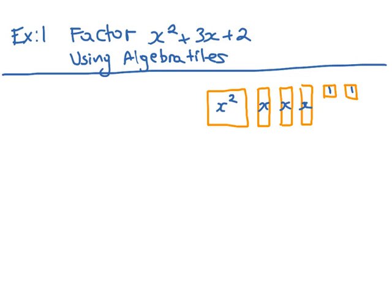So factoring means, in other words, finding the dimension of a rectangle with the following area: x squared plus 3x plus 2. So this is what we're going to do. We're going to make a little rubric like this. And we're going to fit these shapes into a rectangle. So we're going to start with our x squared.